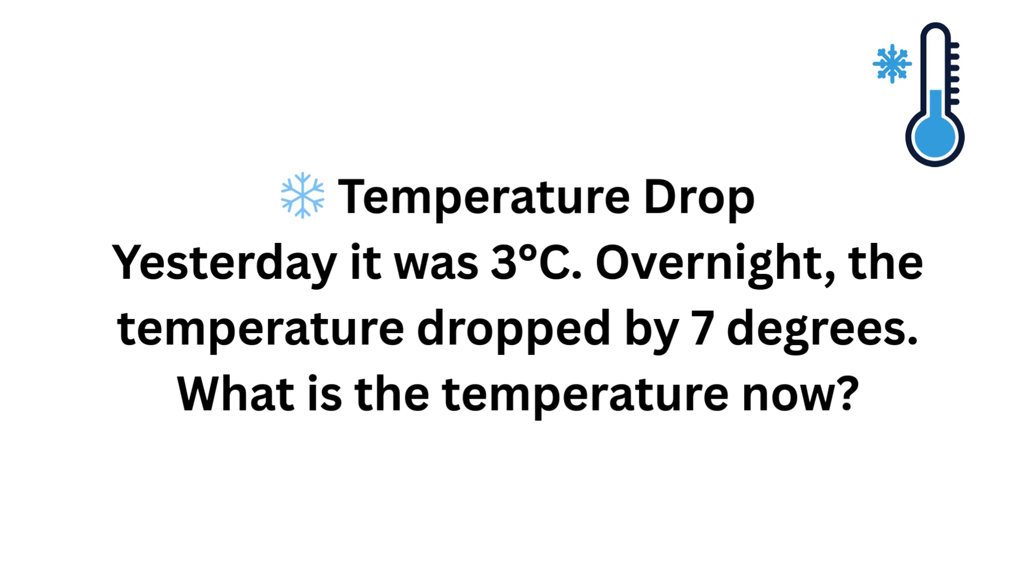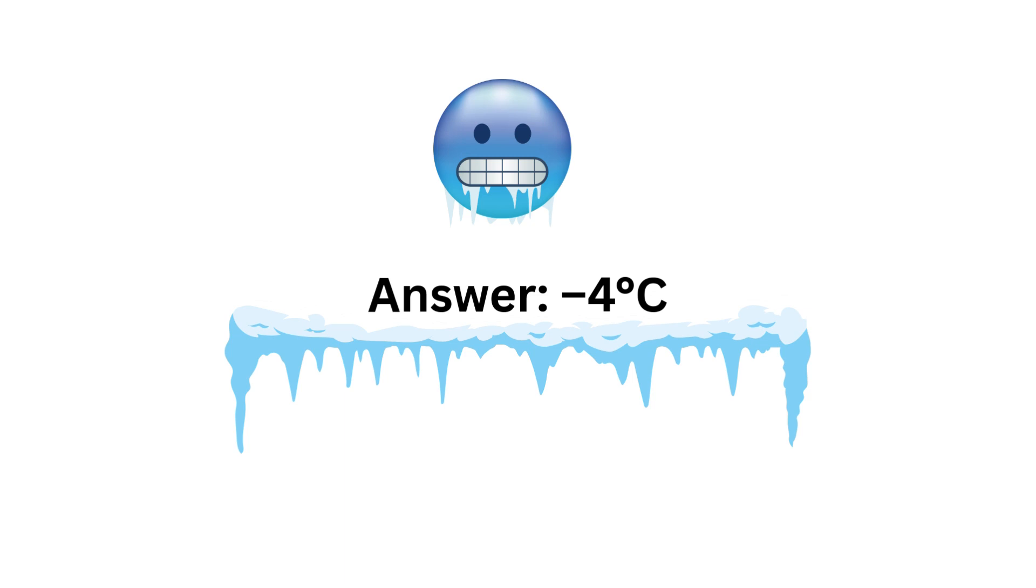Final question now, and this is about temperature. So yesterday it was three degrees Celsius. And overnight the temperature dropped by seven degrees. What is the temperature now? For this question we need to count backwards. We know it started at three degrees Celsius and we need to count back seven. So we'll be counting through zero. We'll start off at positive three, to two, to one, to zero. And then we're going to start counting into our negatives. Minus one, minus two, minus three, and counting back by seven, we end up on minus four.